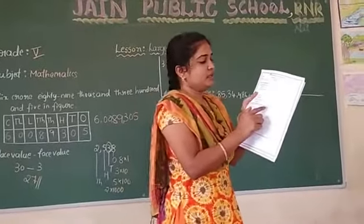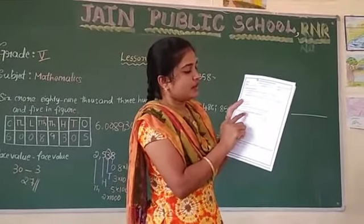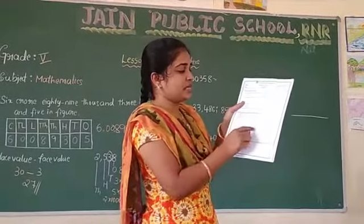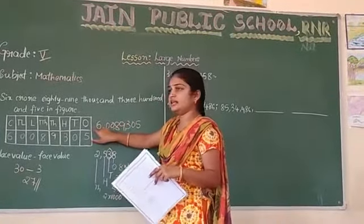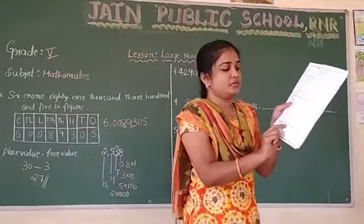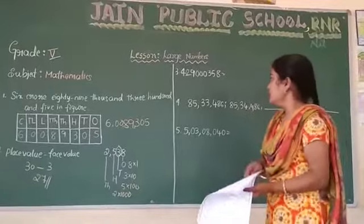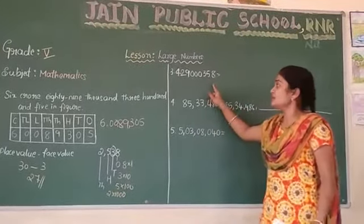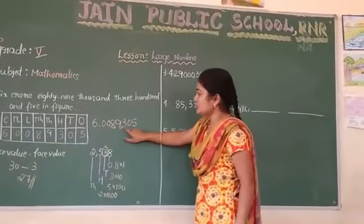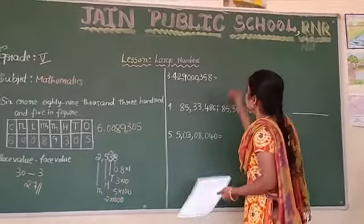Next question: place the following numbers in the place value chart. Numbers like 76, 40000, 200, 300, 50, 240, 960 and so on have to be placed in the chart. Then the third question asks us to write numbers using commas according to the Indian system, read them, and write their number names. Use the comma rule: 3, 2, 2.